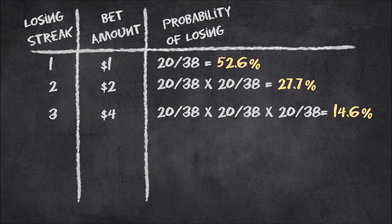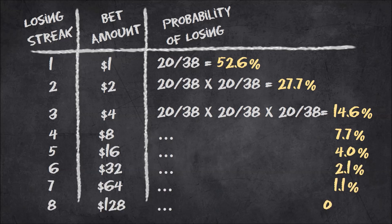So say you lose again, we move up the ladder and double every time. It doesn't take long for the probability of losing to get really small. In fact, at our eighth losing streak, the probability of that is less than 1%, so it's highly likely that we would have already won by then before we hit our $128 bet.